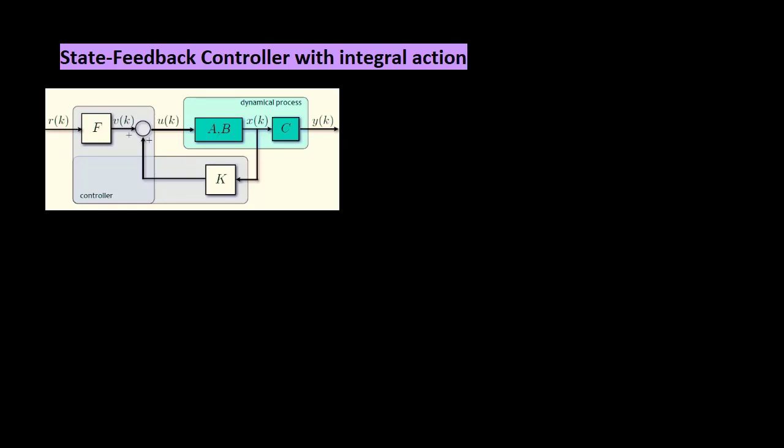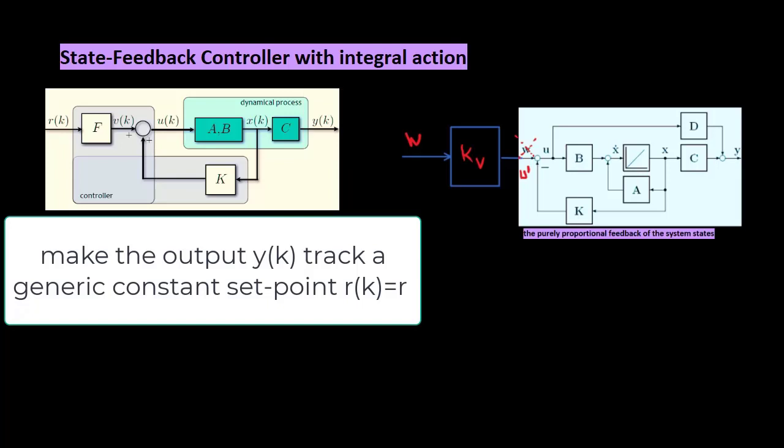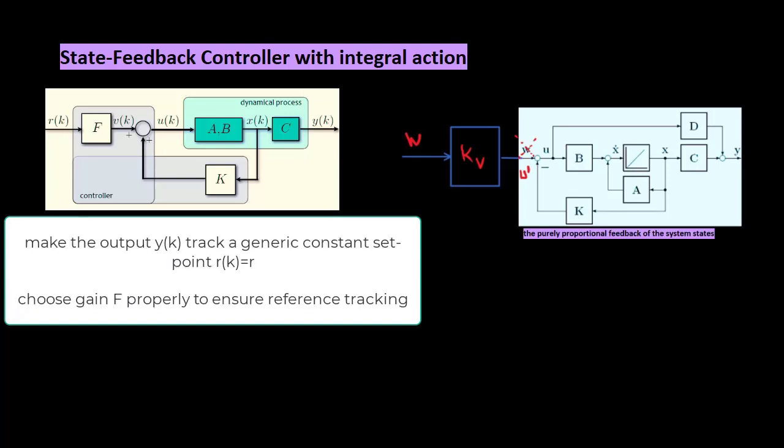We know from last lectures with state feedback we can bring the output to zero asymptotically. So, we need to choose again F properly to ensure reference tracking.